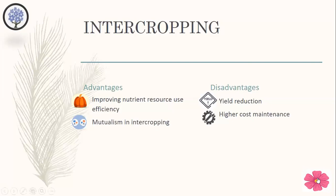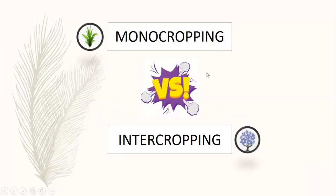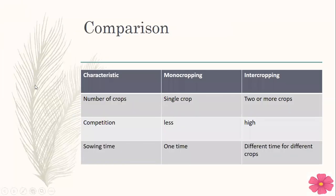Now let's look at the differences between monocropping and intercropping. As you can see in this table, these are the differences between the two systems. From the definition, you can know that they are different. They differ in the number of crops — monocropping has only a single crop while intercropping has two or more crops. Monocropping usually has less competition while intercropping has high competition. For sowing time, monocropping has only one time because there is one crop, but intercropping has different sowing times because it has different crops.